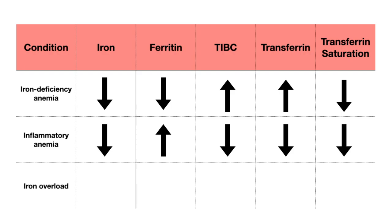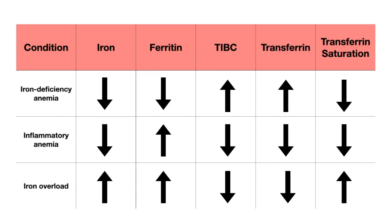Let's now discuss an iron overload state, which is something you would see with a condition like hemochromatosis. In this case, we're going to have a lot of iron in serum as well as in storage. So your iron level is going to be high, and your ferritin level is going to be high. As a result, because ferritin is high, our TIBC and transferrin are going to be low. But unlike with the other two conditions, our transferrin levels are low but they're highly saturated with iron, so your transferrin saturation is going to be high.